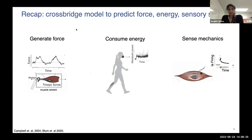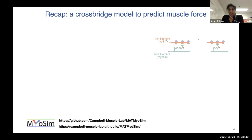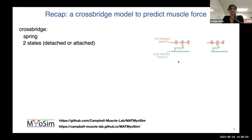Here's a brief recap. I'm interested in using the crossbridge model to predict force, energy, and sensory signals — all outputs from a muscle. Here's a schematic of a crossbridge model. On the right, you can see at the top an actin thin filament and at the bottom the myosin thick filament. The myosin heads can attach to binding sites on the actin filament, creating a crossbridge which generates force, which we scale up to the overall muscle active force.